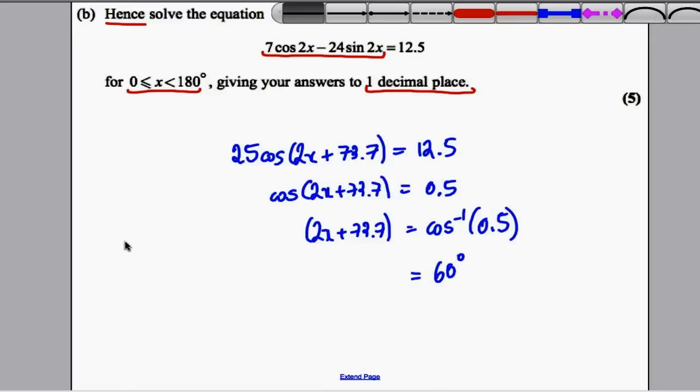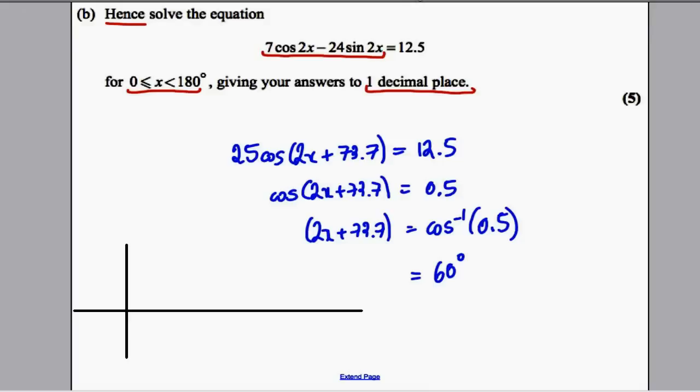We're going to draw out our graph to see what other values are important. We're working between 0 and 180. However, because we're doubling our x and adding 73, let's double the 180 and add 73. We want to draw the graph approximately between here. Cos goes like this. This point here is 90, this is 180, this is 270, this is 360, and this is 450.